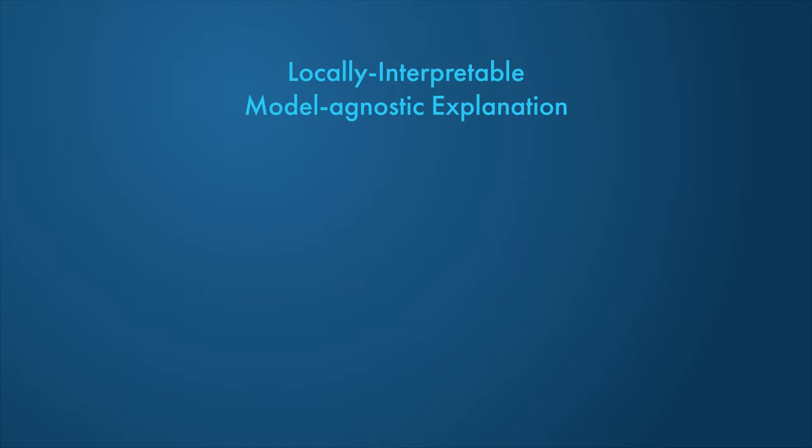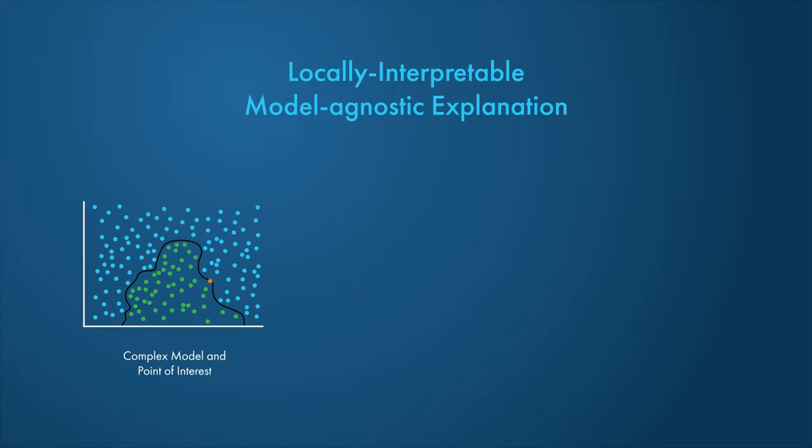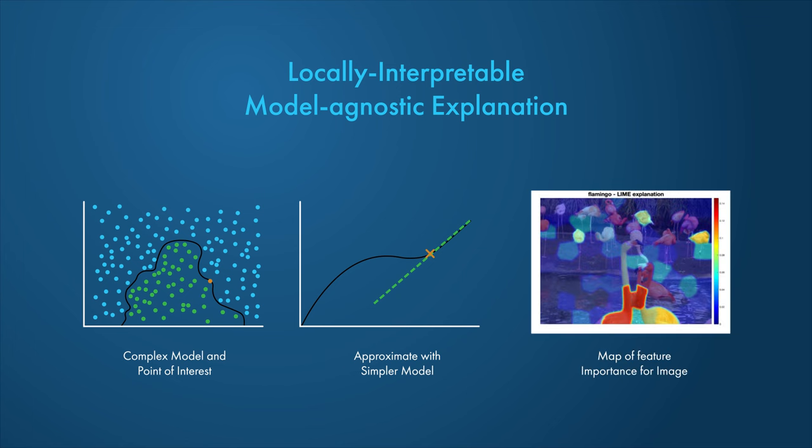Lime approximates the behavior of a complex model by using a simpler, more interpretable model, such as a regression tree. The simple model is used to determine the importance of features of the input data as a proxy for the importance of features to the deep learning model.